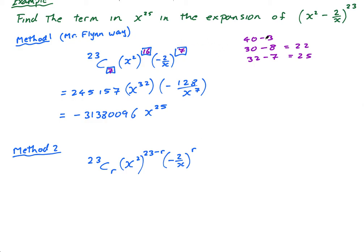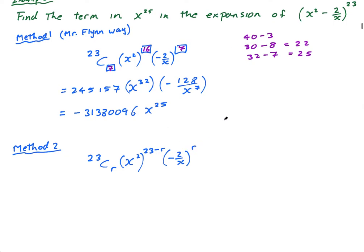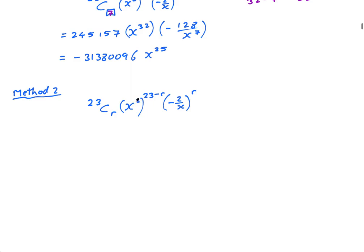And the key to the whole thing is to find r. What is r? I found it here, it was 7 by doing this little thing. The way we're going to find r in this situation is we're going to look at the x's. So this is x^(2 times 23 minus 2r) times x^(-r). And this has to equal x^25 because we're trying to find the term in x^25.